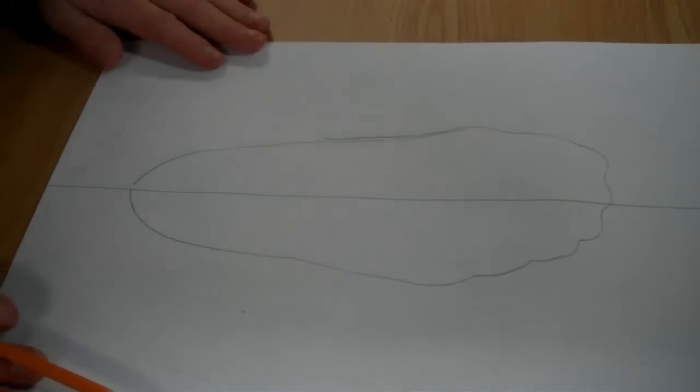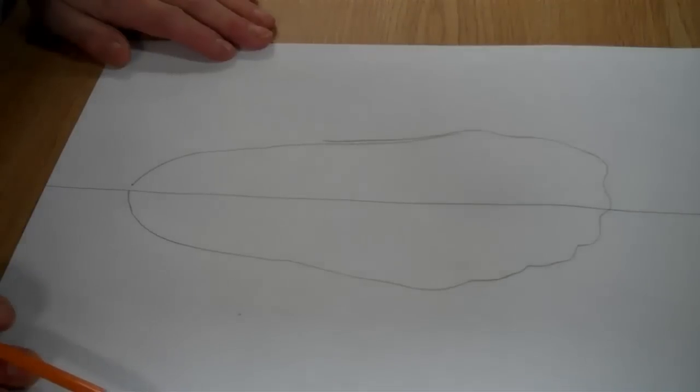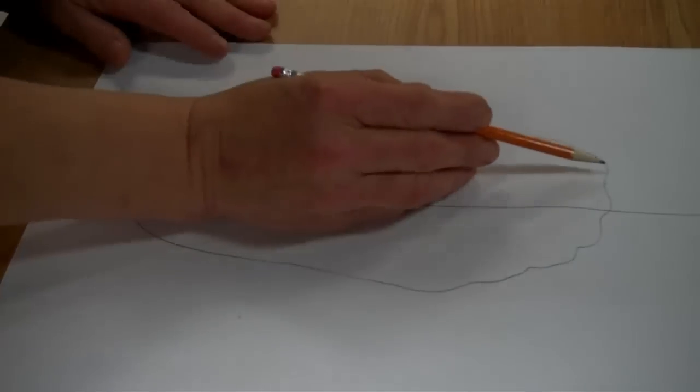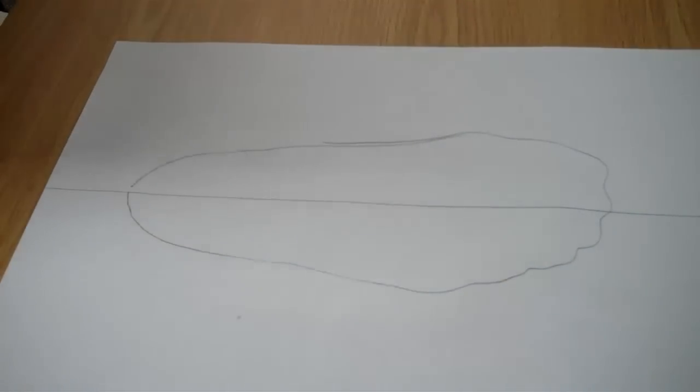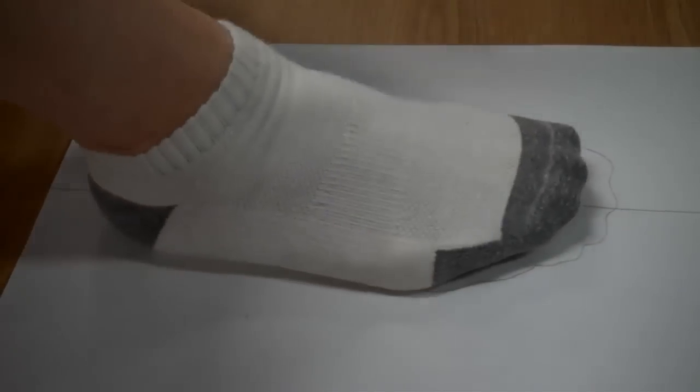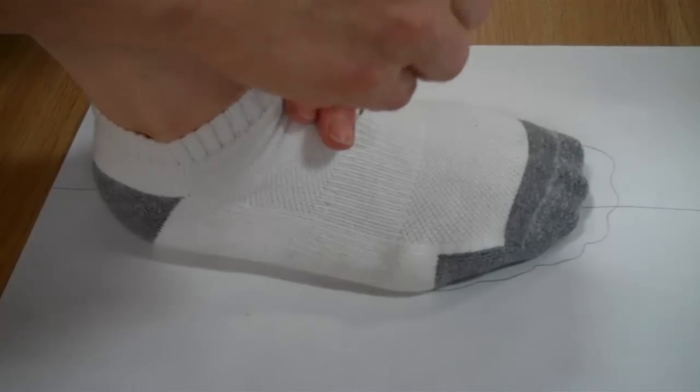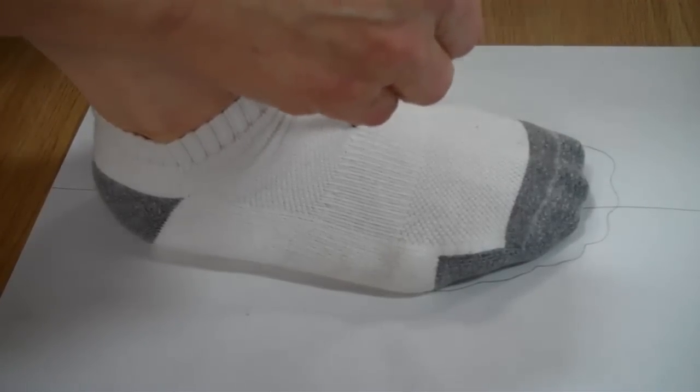So once you have your foot traced out like that, what you're going to do is you need to have the measurement from the tip of your toe to two fingers in front of your foot. So you're going to measure two fingers in front of your bend in your ankle to the tip of your toe, which is five inches.